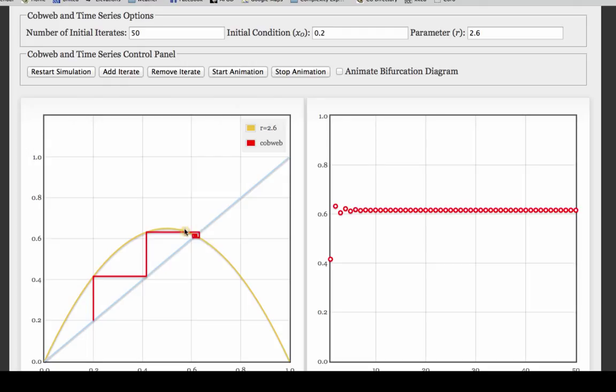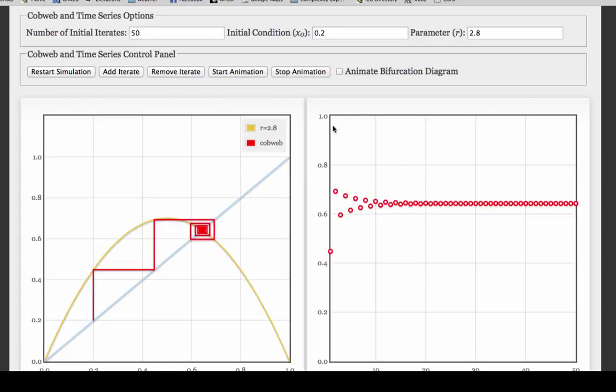Now look in here. This is a cobweb plot. This is x_n plus 1 versus x_n, like I drew a bunch of last time. And you can start seeing that this convergence is oscillatory. Let's make it bigger. There's r equals 2.8, and you're starting to see the squared off inward spiral that I was drawing in the last segment.